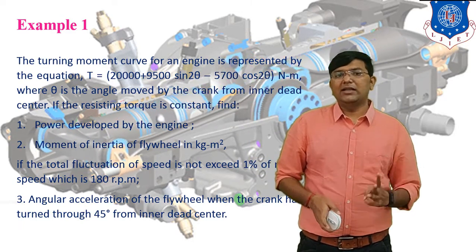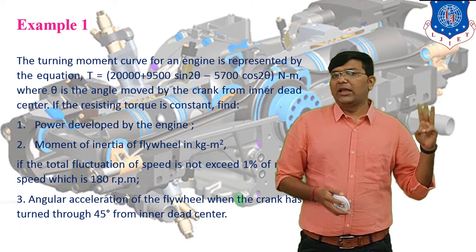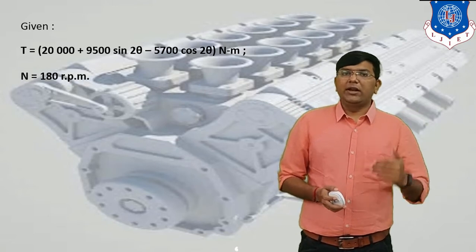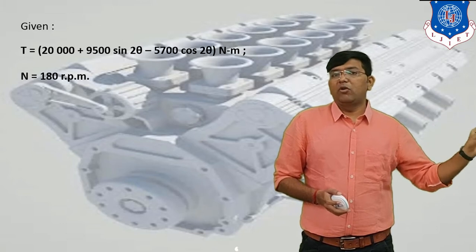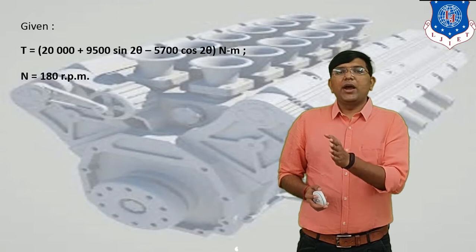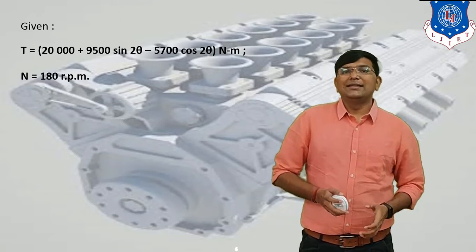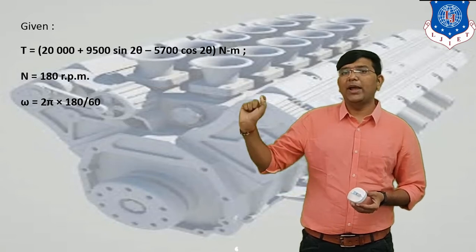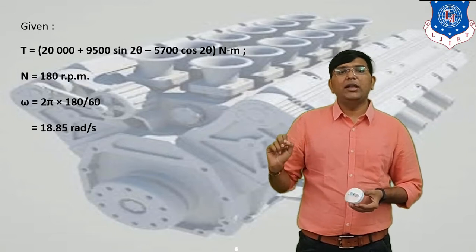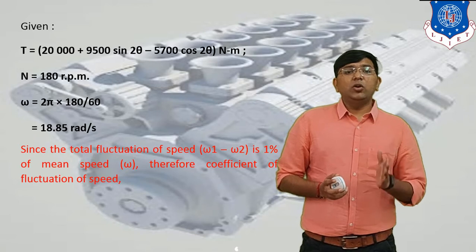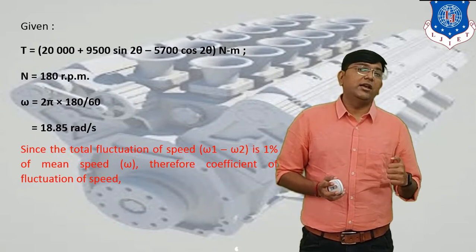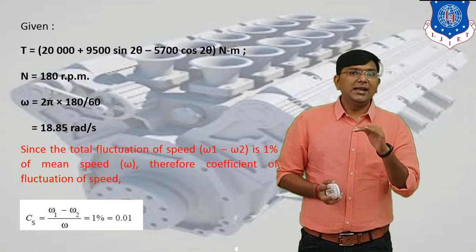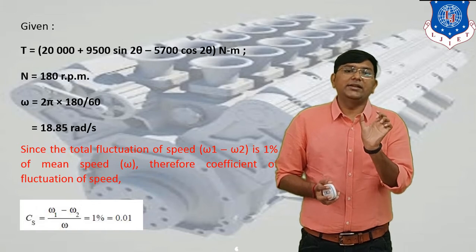So we have to calculate three things: first, power; second, moment of inertia; and third, angular acceleration. The given data are: the turning moment equation T equals 20,000 plus 9500·sin(2θ) minus 5700·cos(2θ) N·m; speed N equals 180 RPM; omega equals 2πN/60 equals 2π×180/60 equals 18.85 rad/s; and the coefficient of fluctuation of speed Cs equals 1% equals 0.01.